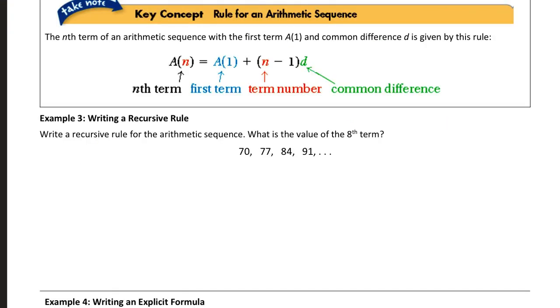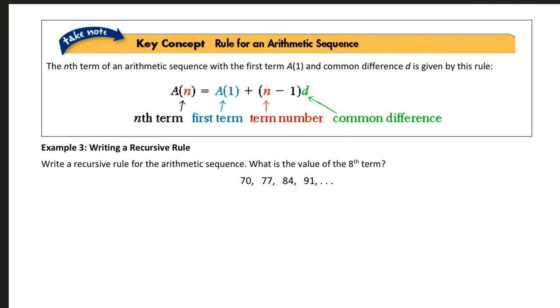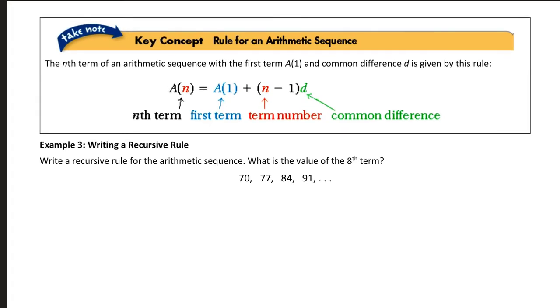So moving ahead, we are going to talk about writing a rule for an arithmetic sequence. And that's where this little section gives us a little bit of a breakdown of how to write an arithmetic sequence. So we use this function notation, this A parentheses N. N stands for the nth term of a sequence. This A parentheses 1 stands for the first term. N is the term's number. And D is the common difference.